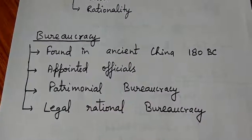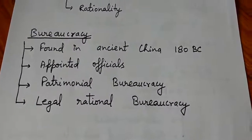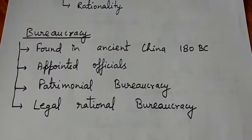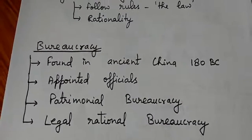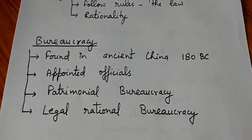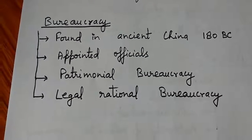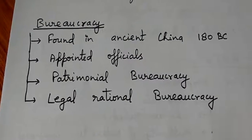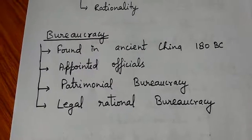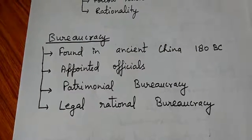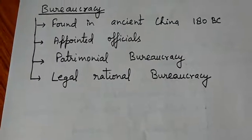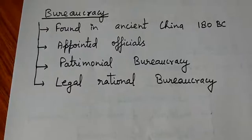Now we turn to bureaucracy, Weber's most famous and important contribution. Bureaucracy was found in ancient China as early as 180 BC, so it is not a new concept. The word 'bureau' means desk and 'cracy' means working — literally 'desk officers.' The key point is that bureaucratic officers are appointed officials, not elected ones. Elected officials like Members of Parliament are representatives and are not part of bureaucracy.